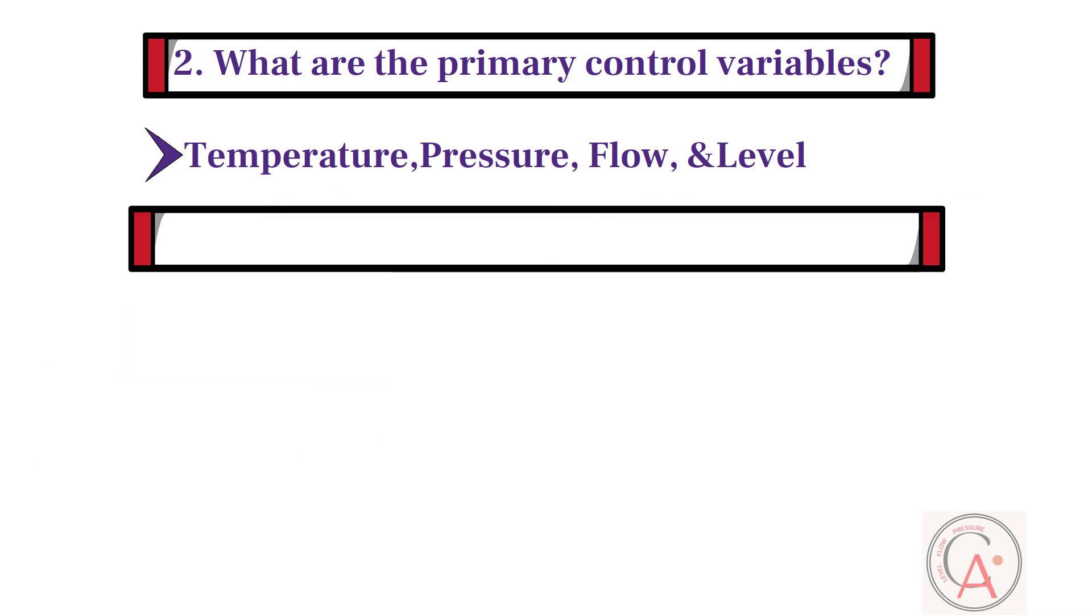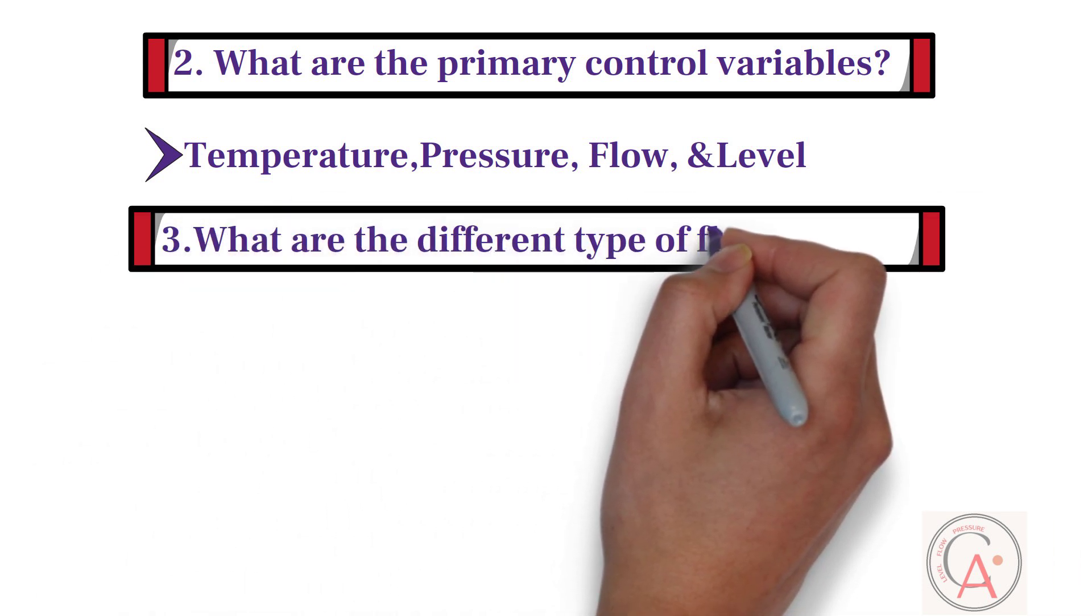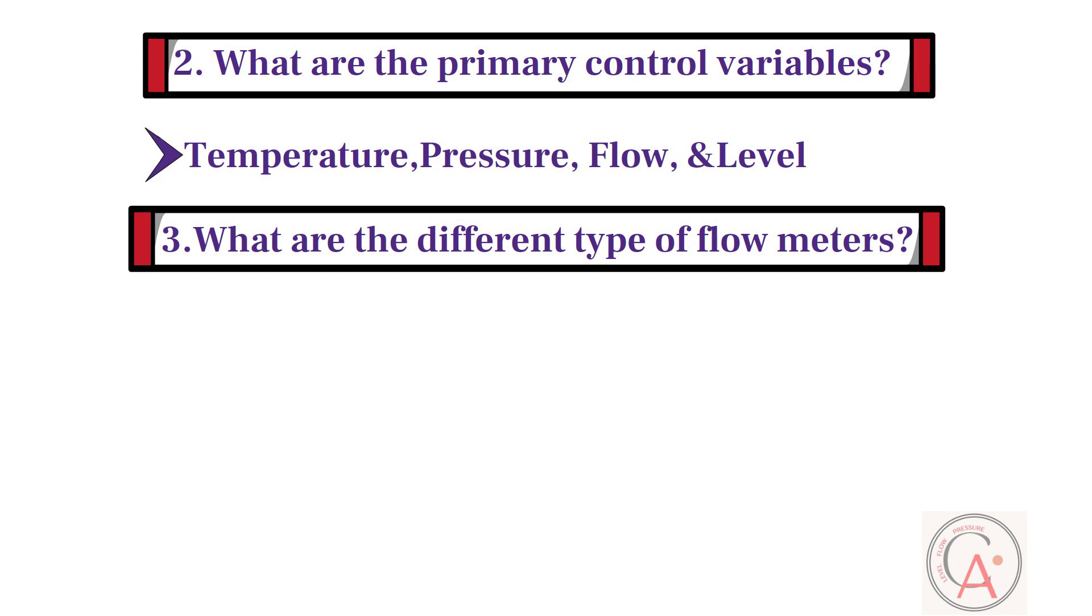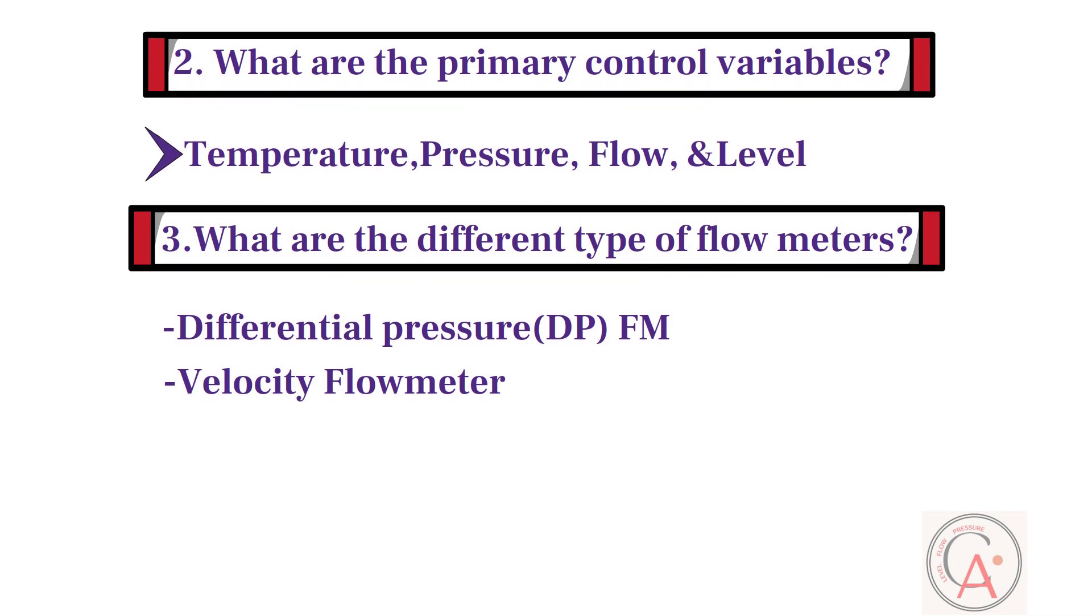The third question is, what are the different types of flow meters? Based on the working principle, there are five types of flow meters. First is differential pressure or DP flow meter, second type is velocity flow meter, third type is positive displacement flow meter, and fourth type is mass flow meter.